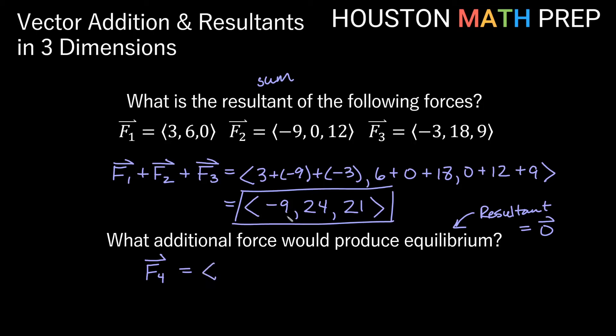So what could I add to the negative 9 total that we already have to give zero? Well, a positive 9 would zero out this negative 9. And to zero out this positive 24, I would need to add a negative 24 to that. And similarly, I would need to add a negative 21 to balance out and get a zero for the z component. So if I add this vector in to my collection of the other three, then all of these are going to add up to zero.